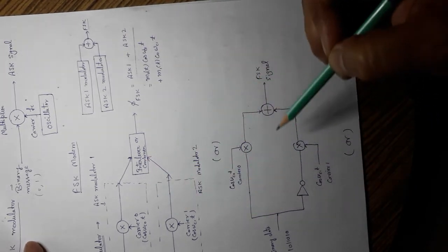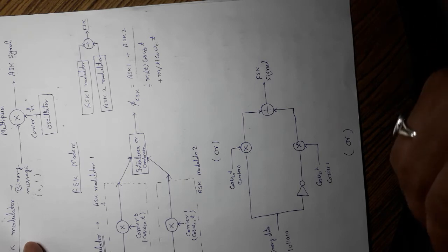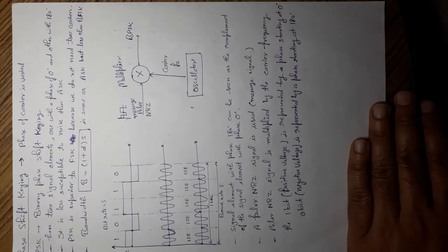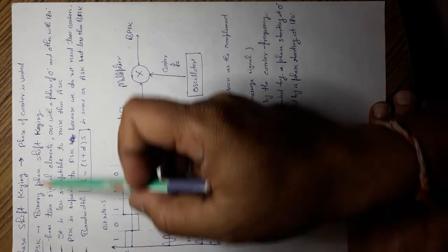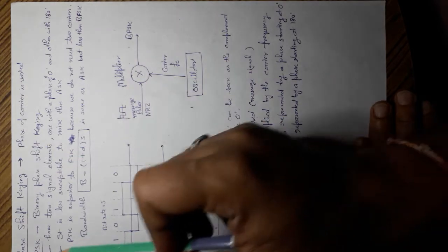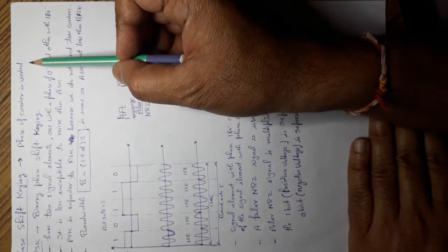These are the FSK coherent method. This is phase shift key. In phase shift key, the phase of carrier is varied.